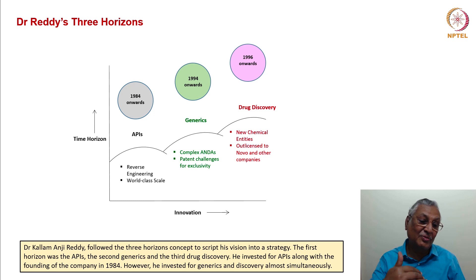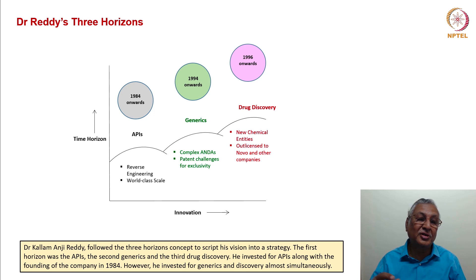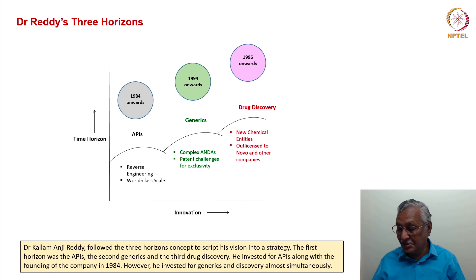Dr. Reddy's three horizons could be graphically presented with innovation on the x-axis and time horizon on the y-axis. From 1984 onwards: APIs, reverse engineering, and world-class scale. From 1994 onwards: generics, complex dosage forms, and patent challenges for exclusivity. From 1996 onwards: drug discovery, new chemical entities, and out-licensing to Novo Nordisk and other companies. Dr. Anji Reddy followed the three horizons concept to script his vision into a strategy. He invested for APIs at the founding in 1984, and invested for generics and discovery almost simultaneously — and there lies his greatness.